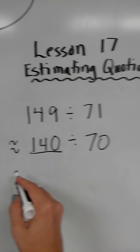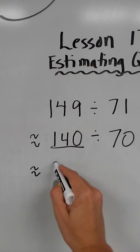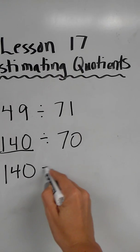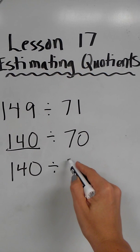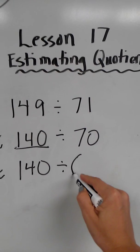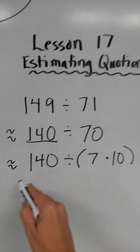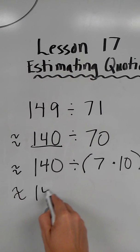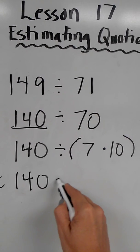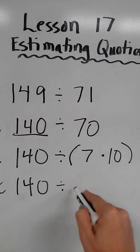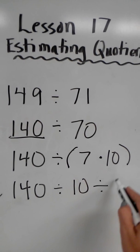So now I can use the same strategies we were using the other day. I'm going to decompose my divisor. I'm going to decompose 70 into 7 times 10, or I could have done 10 times 7. And then I'm going to distribute my division sign. So I'm going to actually switch the order of these, divided by 10, and divided by 7.